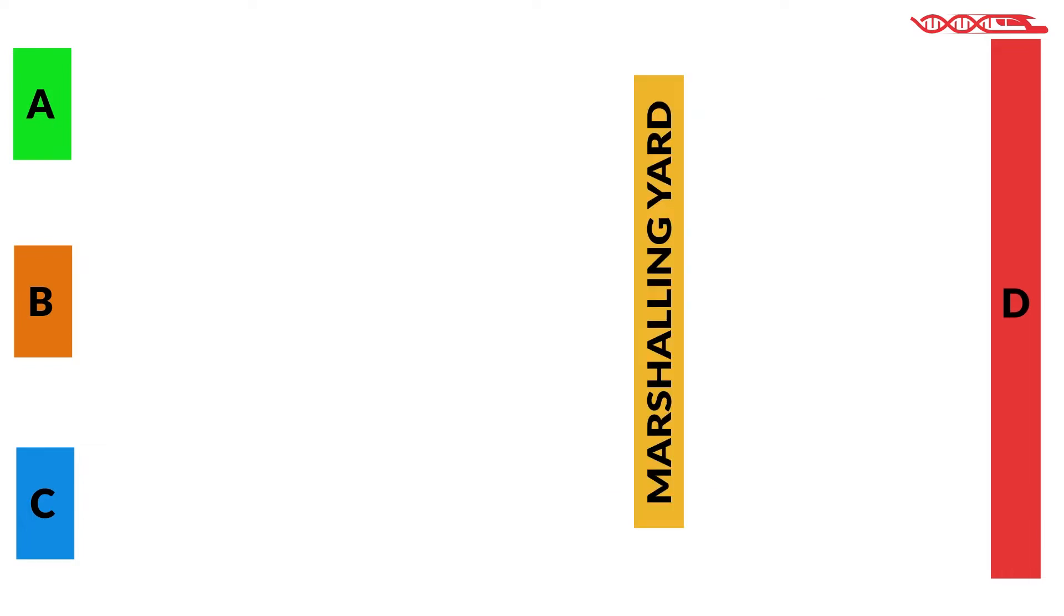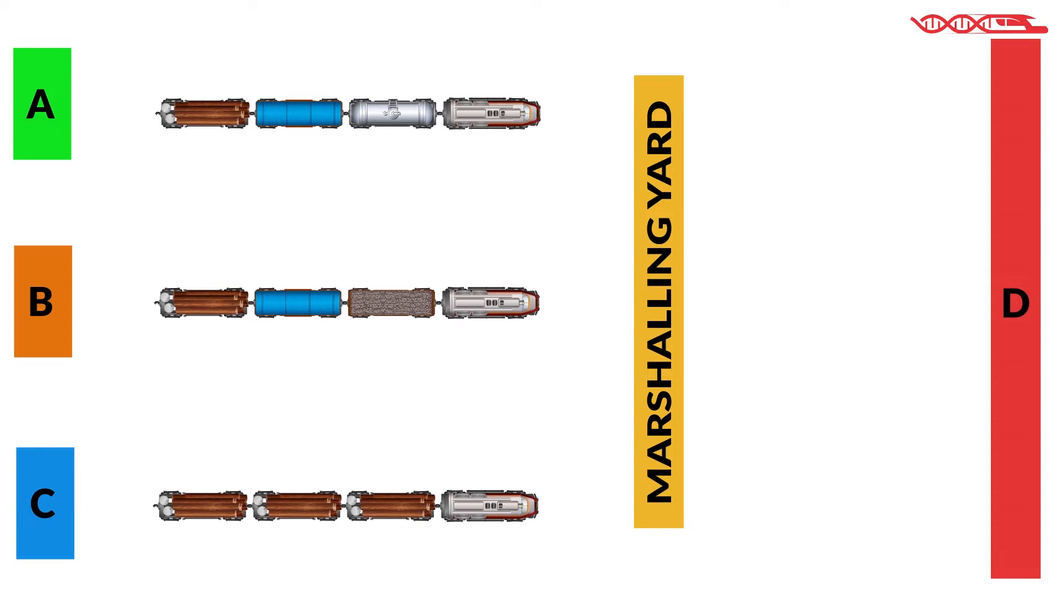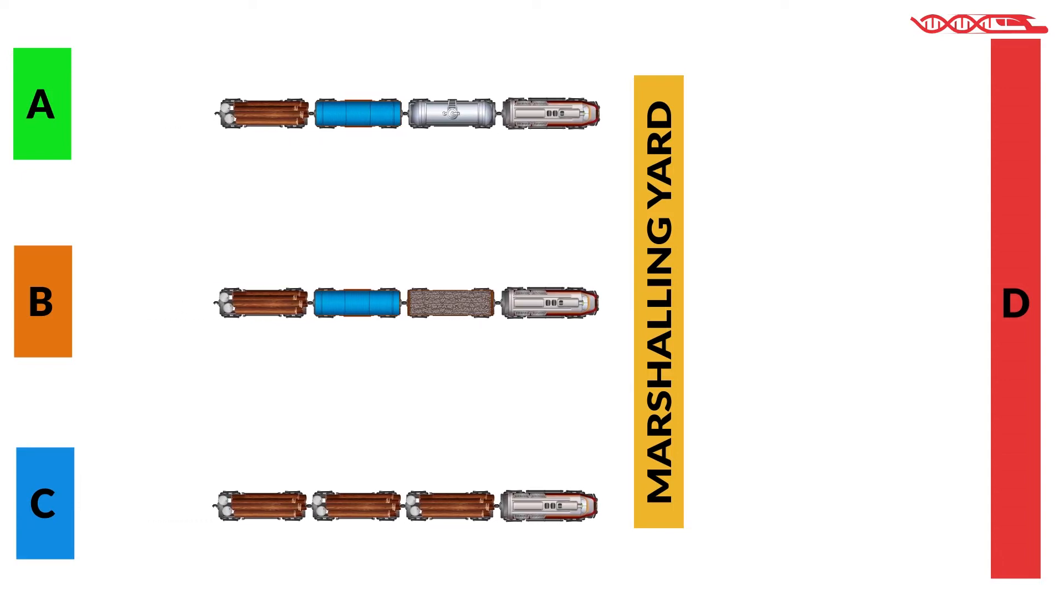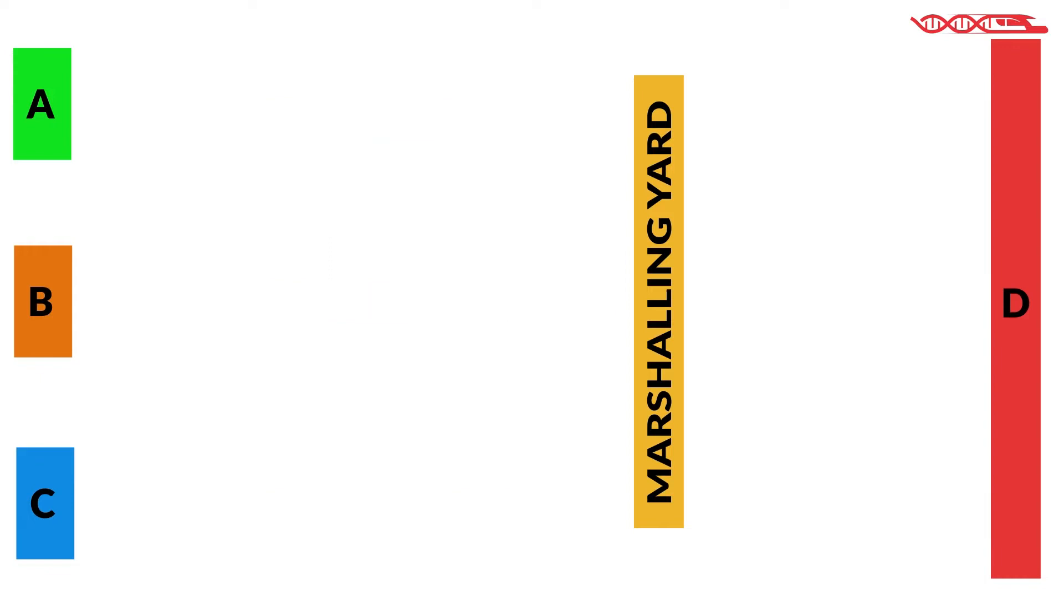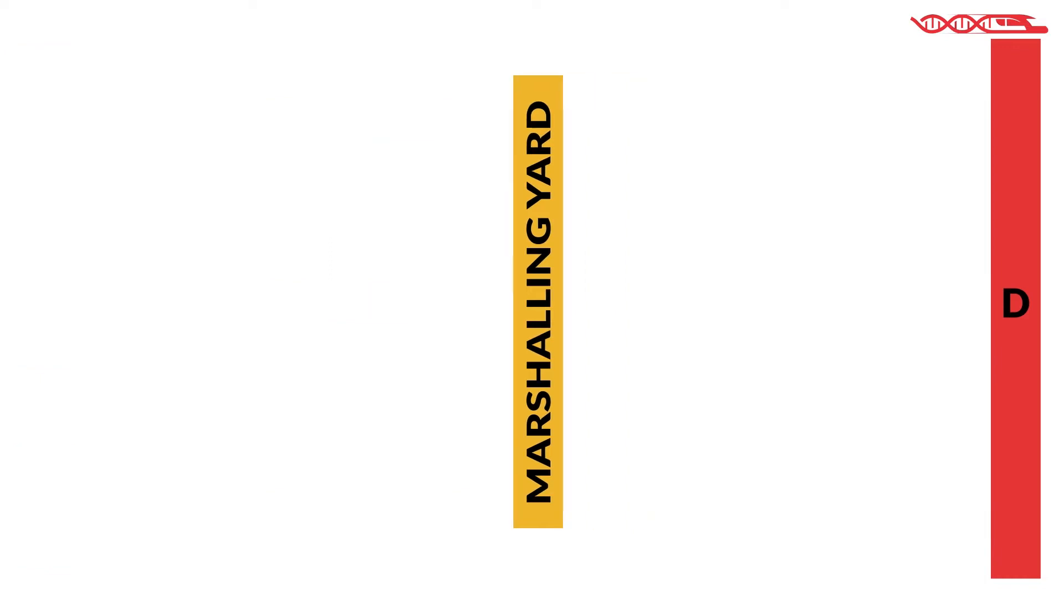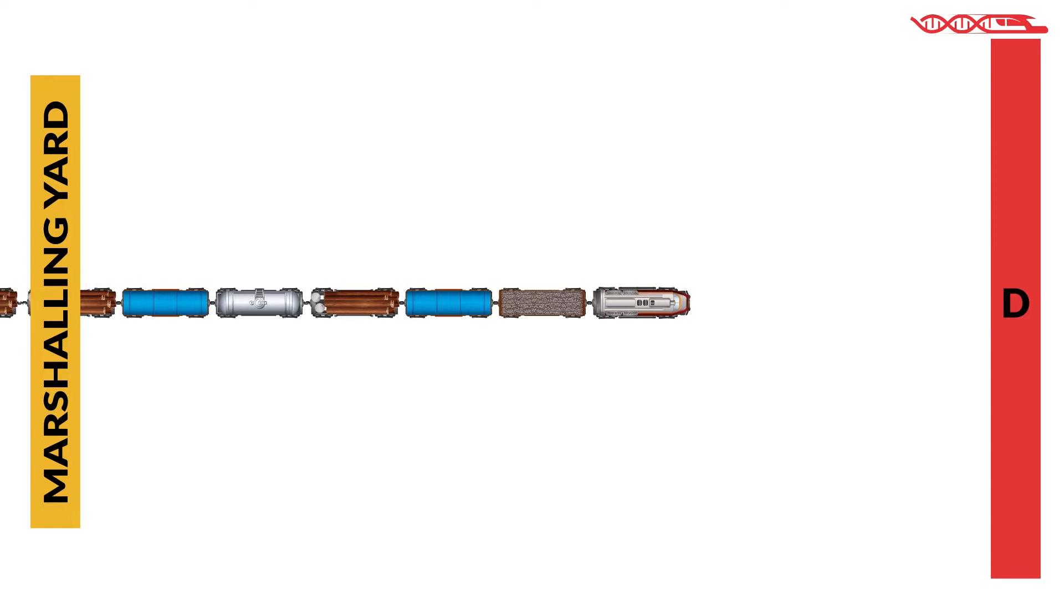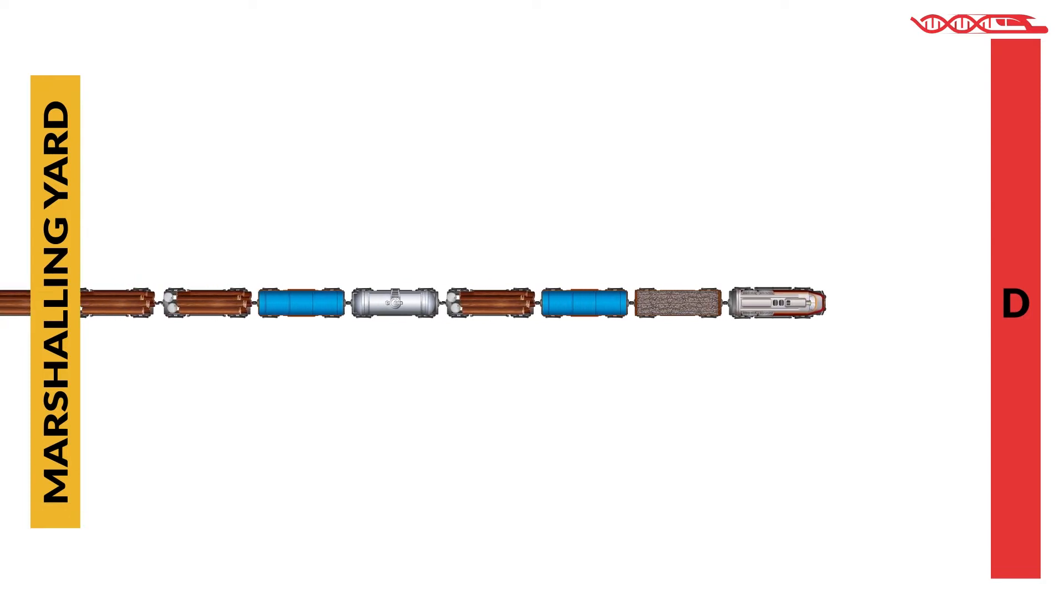Instead, imagine that there is a marshaling yard somewhere between these points. This means it is more logical to transport these goods from points A, B, C to the marshaling yard, disassemble these trains, and complete only one train of nine cars which will deliver goods to final destination D.